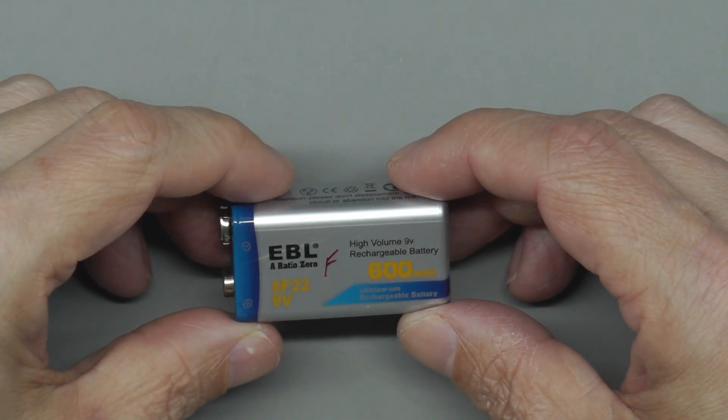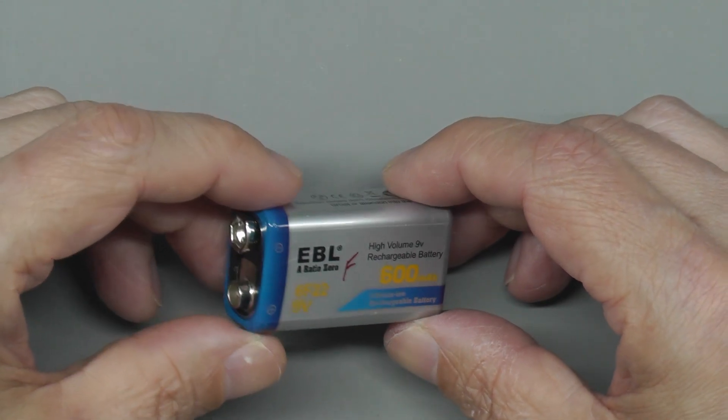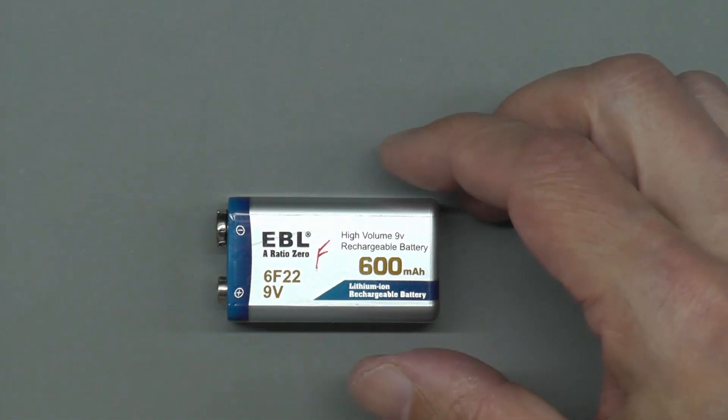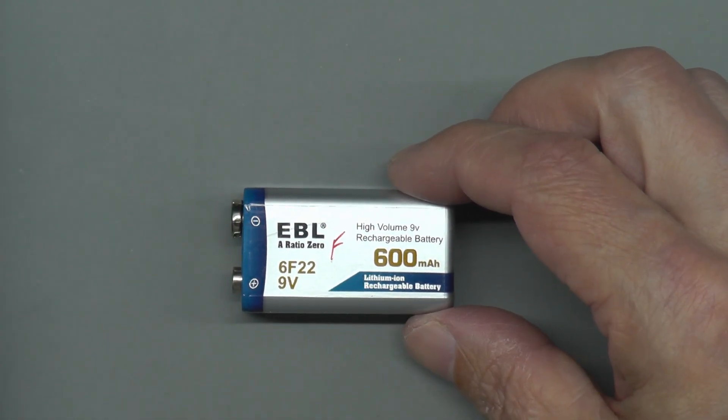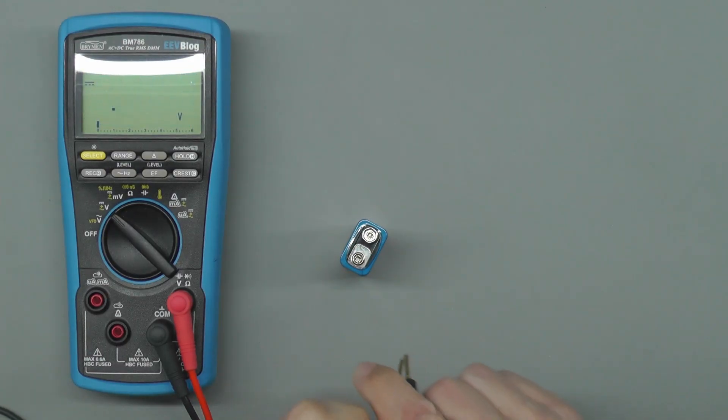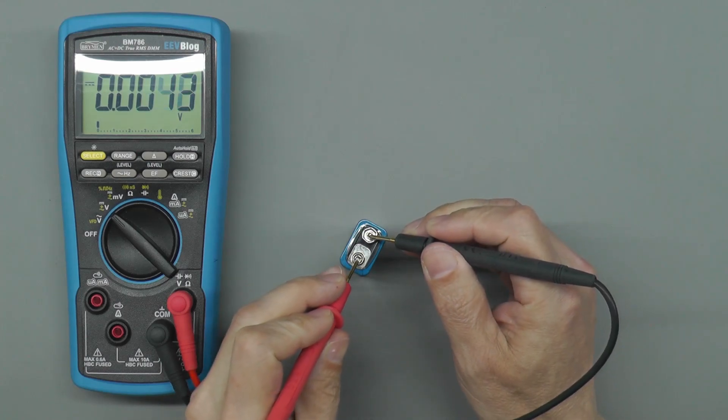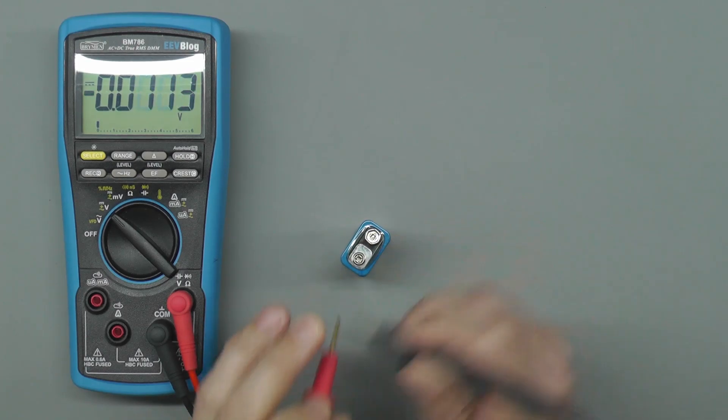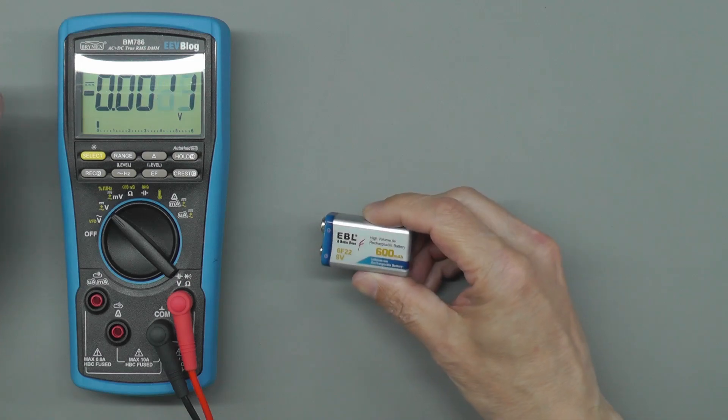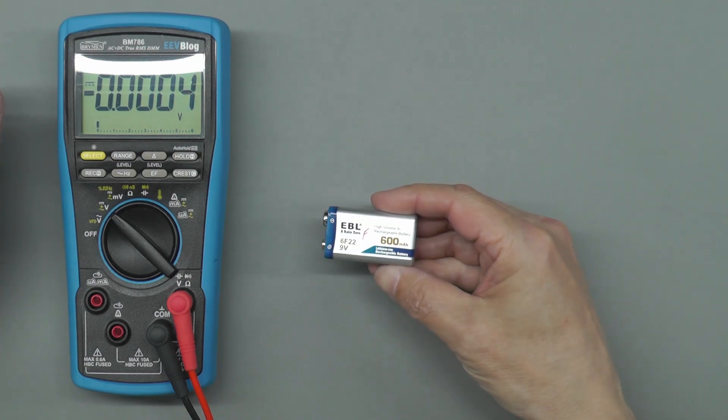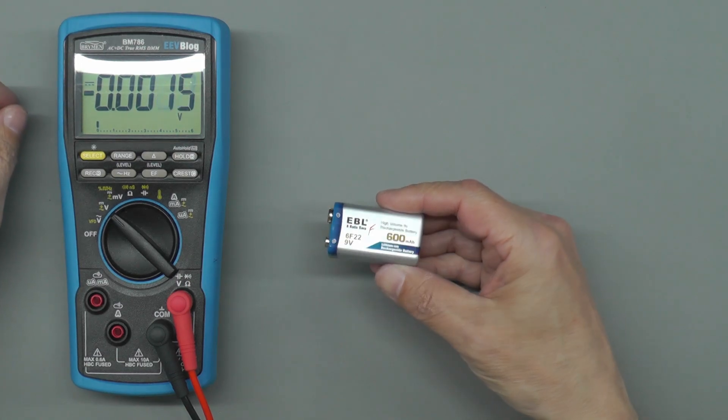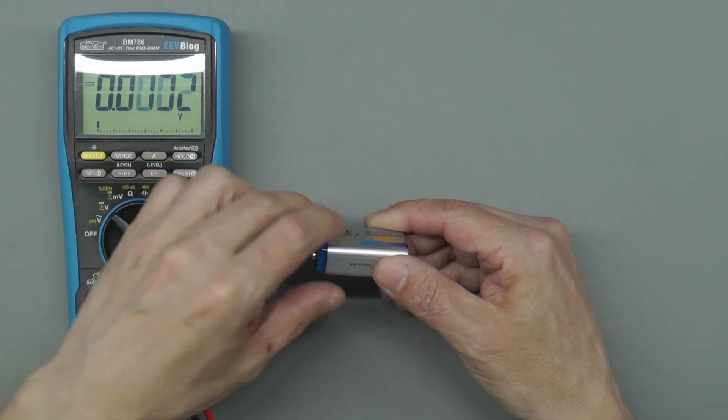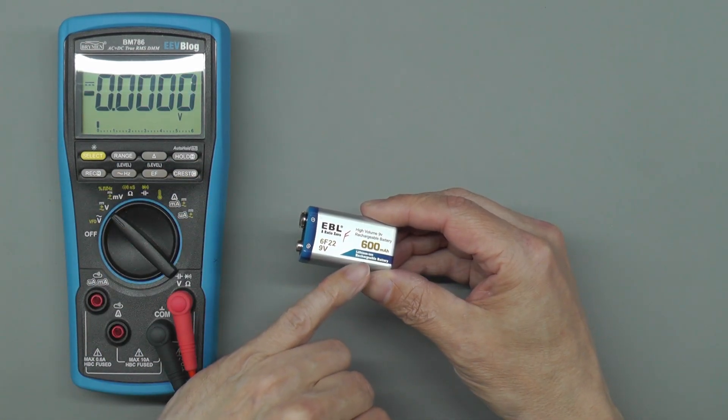If I just hook up my multimeter here, let me zoom out. Purchased brand new and it's just completely dead, as you see. I know it's not flat because I've actually tried sticking it on the charger to see what happens, and it's just zero current flow. It just doesn't do a thing.